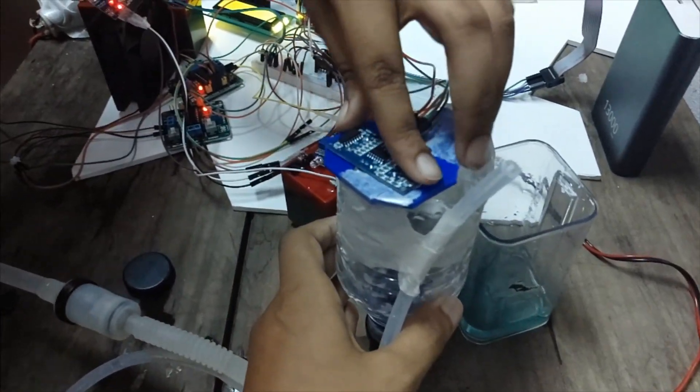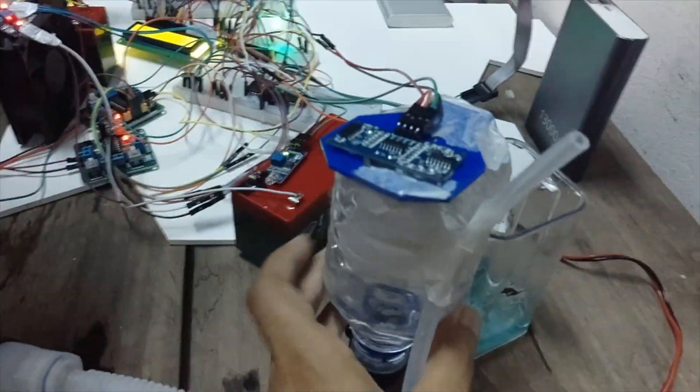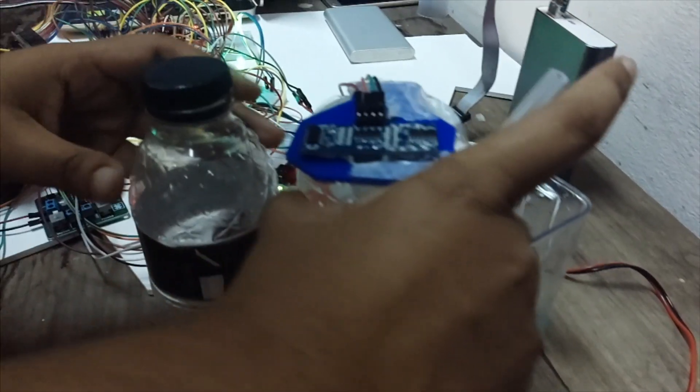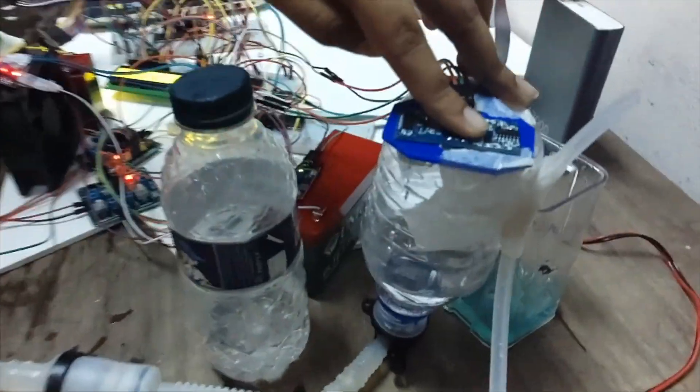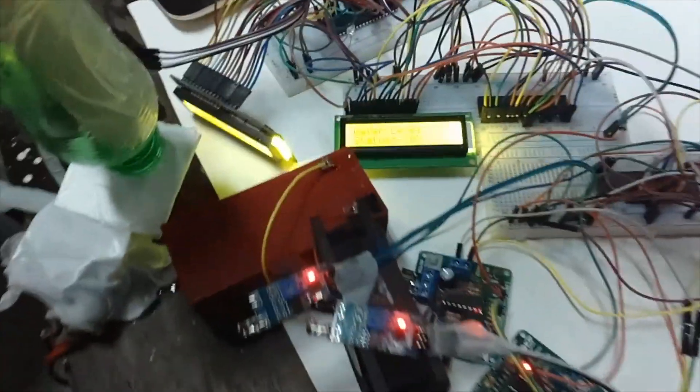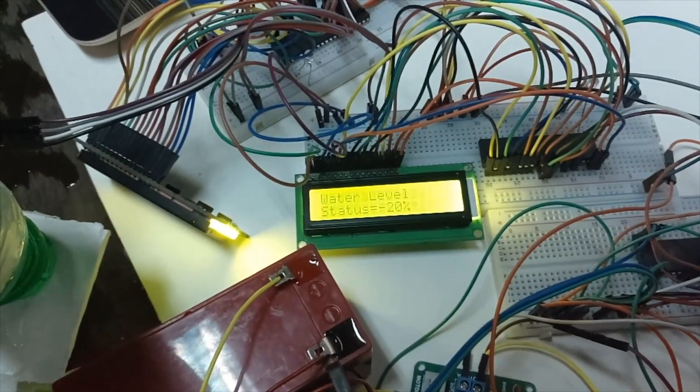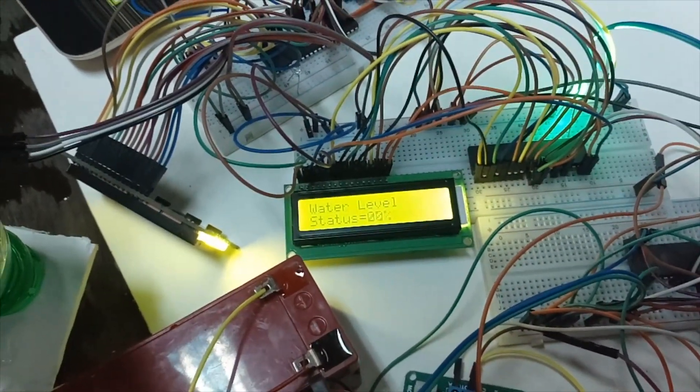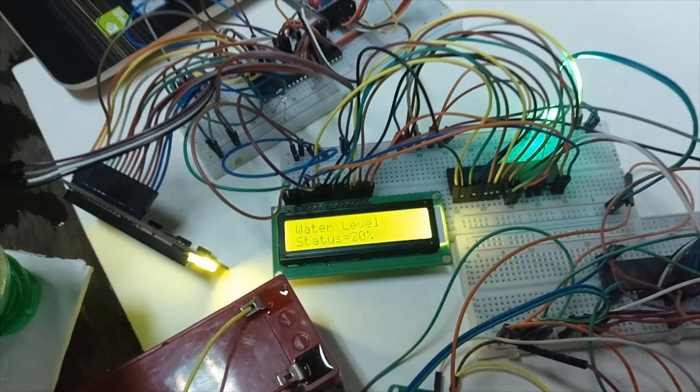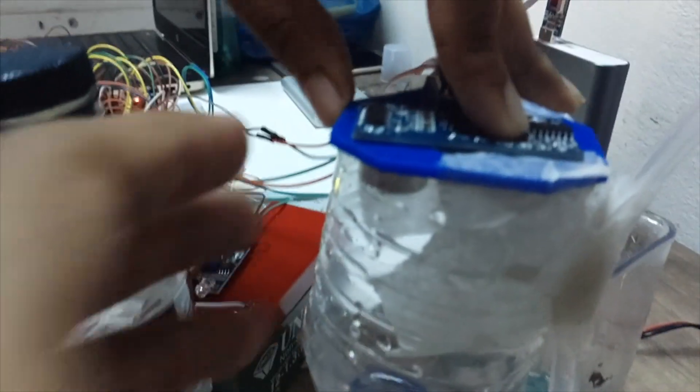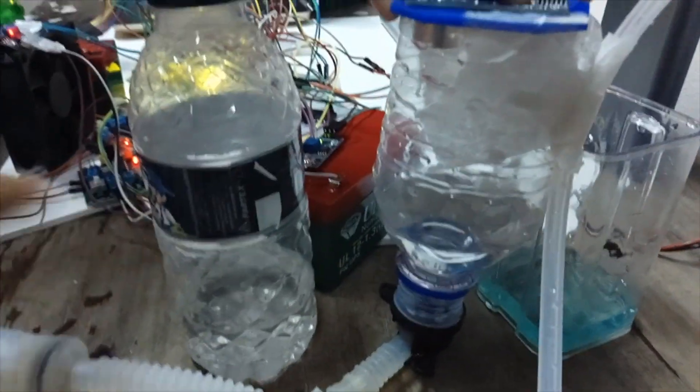So we are using a sonar sensor to detect the level of the water. As we can see, it is not nearly full enough. We can see the level of the water here. It shows 0%, 0 to 20%. The negative sign is showing because the bottle is kind of tilted.